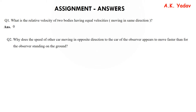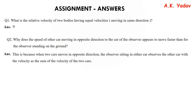Question number 2: Why does a car moving in the opposite direction appear to move faster to an observer in another car? Both cars move in opposite directions, so we add their velocities — that is why the total velocity increases for the observer.